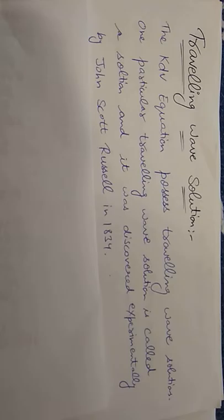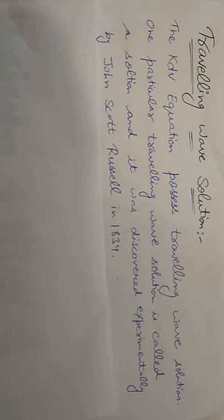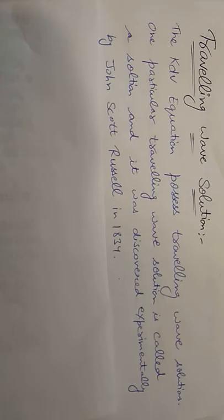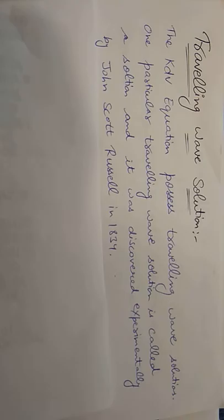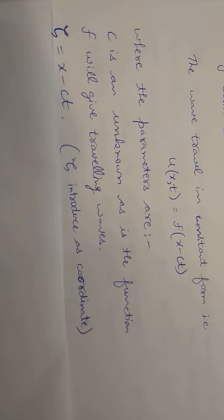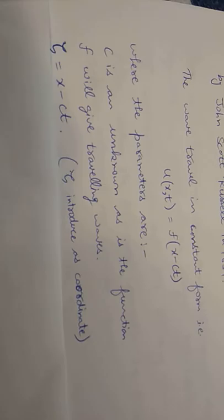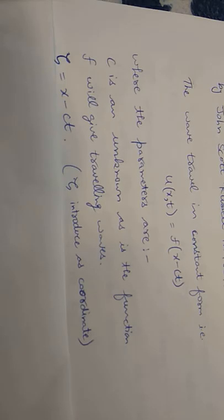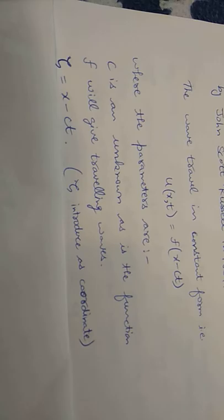Traveling wave solution: the KdV equation possesses traveling wave solutions. One particular traveling wave solution is called a soliton, discovered experimentally by John Scott Russell in 1834. The wave travels in constant form, that is u(x,t) equals f(x minus ct), where c is unknown. f will give traveling waves, and chi equals x minus ct is introduced as a coordinate. Putting the expression into the KdV equation, we get the equation.